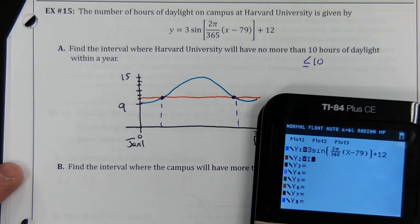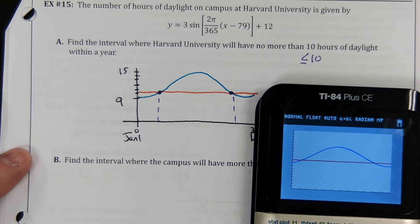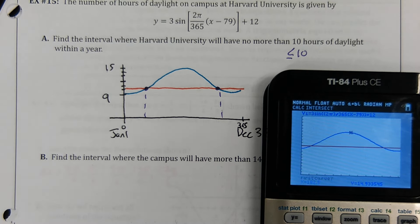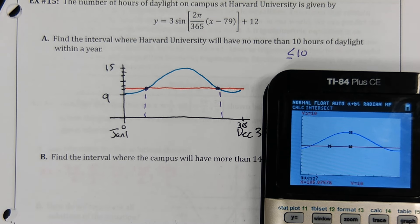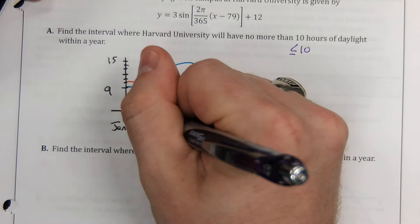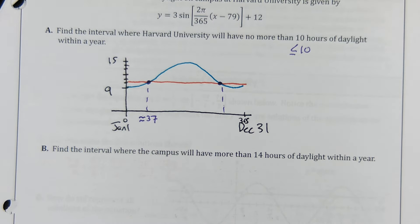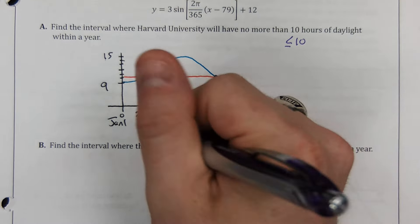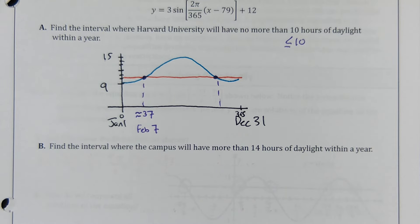Y equals 10. Graph. There we go. So second trace intersect. Second trace 5, enter, enter. That way it selects the 2. And hit enter there. Now we're not going to do partial days. So let's round to the nearest day. That 36.6, that's about 37 days. Well, if January, if you're calling January 1 day 0, and there's 31 days in January, that makes this February 7th.